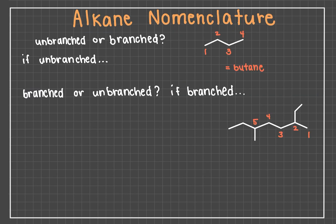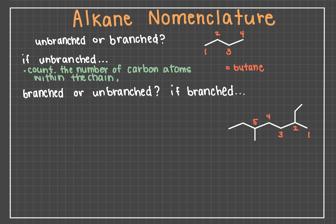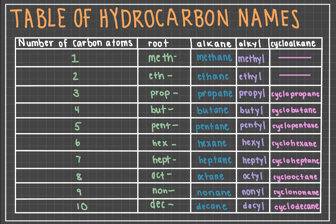Firstly, you should determine if you are asked to name an unbranched or branched alkane when given an alkane nomenclature problem. An unbranched alkane is the simplest to name — just count the number of carbons within the chain and add the suffix "-ane". The number of carbons in the unbranched alkane will correspond with a certain root, as shown in the sequence below. A one-carbon alkane is called methane, two carbons is ethane, three carbons is propane, four is butane, and the rest are displayed in the table. The basis of all organic chemistry nomenclature comes from these names.